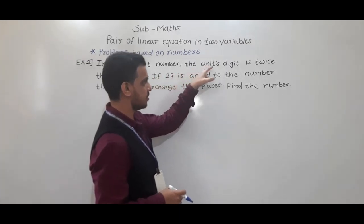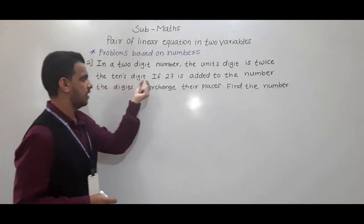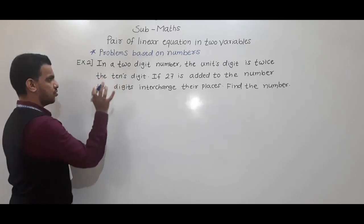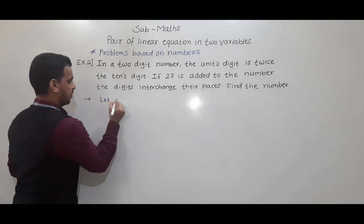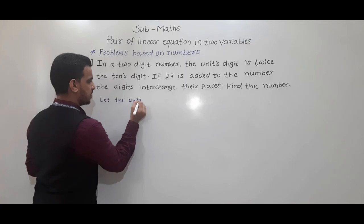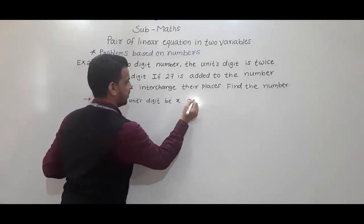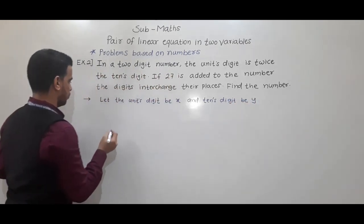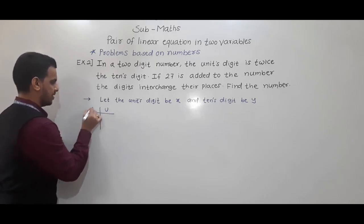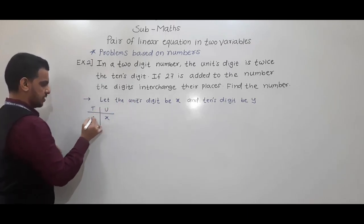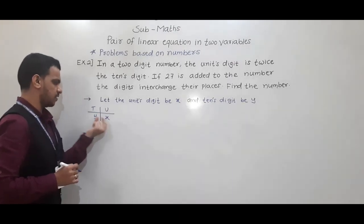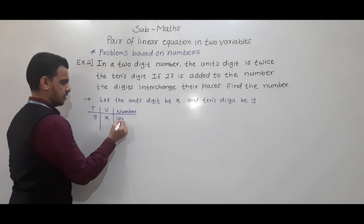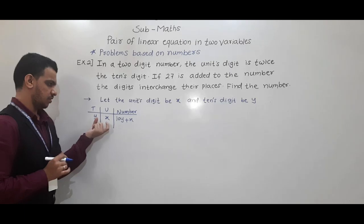Now we will take the second example. In a two-digit number, the units digit is twice the tens digit. If 27 is added to the number, the digits interchange their places — find the number. So let the units digit be x and the tens digit be y.